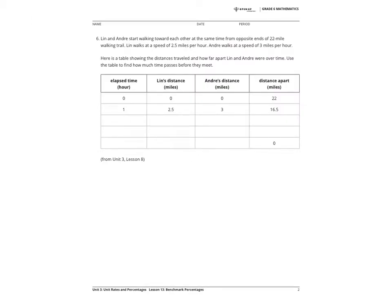Lynn and Andre start walking toward each other at the same time from opposite ends of a 22-mile walking trail. Lynn walks at a speed of 2.5 miles per hour. Andre walks at a speed of 3 miles per hour. Here's a table showing the distances traveled and how far apart Lynn and Andre were over time. Use the table to find how much time passes before they meet.